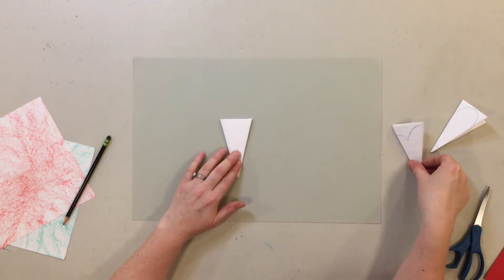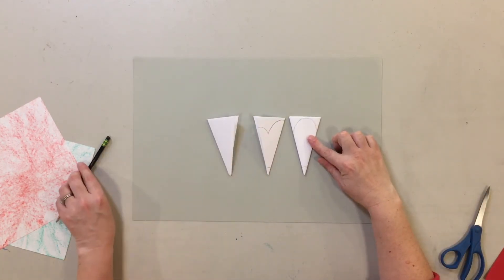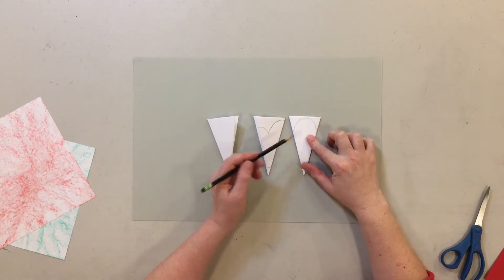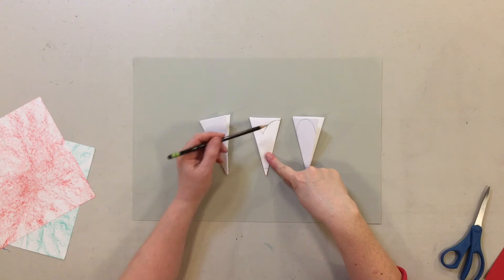Now this is a kirigami base that you could make snowflakes with, but we're going to make sure that they look more like flowers. So with a pencil, or you could just cut it freehand, you're going to cut a little pencil point off the bottom and